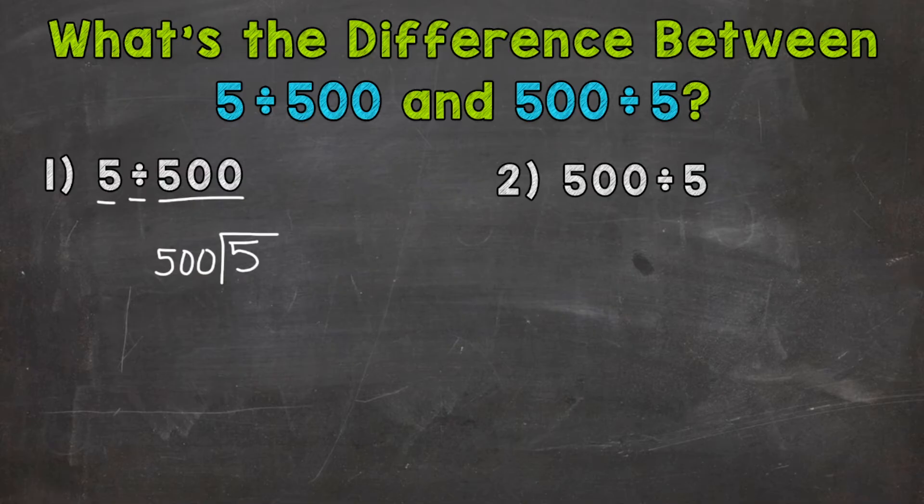So let's go through the process of solving this, and we'll see what the difference is between our answers between 5 divided by 500 and 500 divided by 5. So we'll go through our division process, and our first step is divide. So 5 divided by 500. How many whole groups of 500 can we pull out of 5? Well, we can't do that. So let's put a 0.